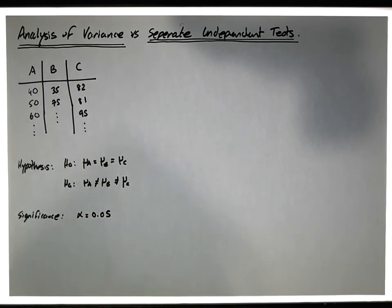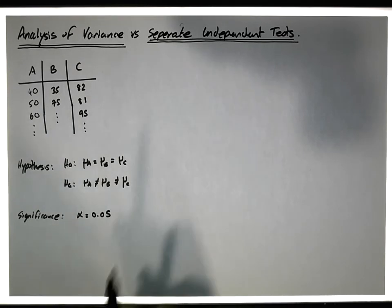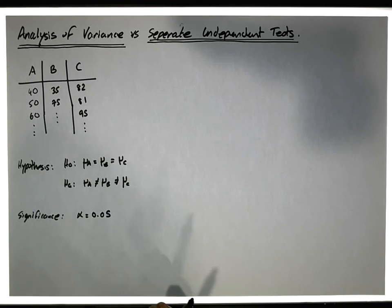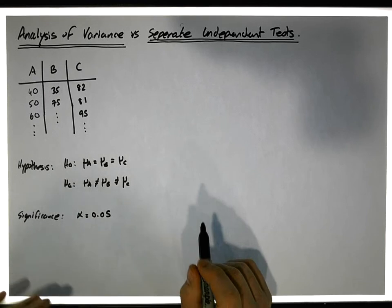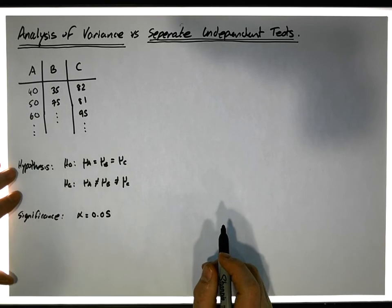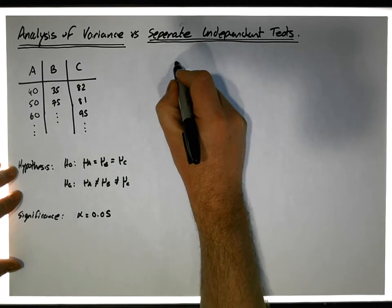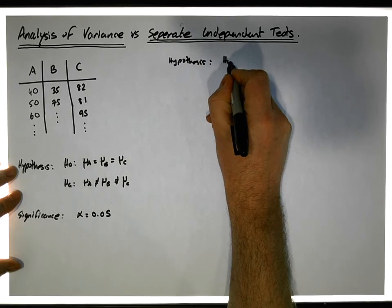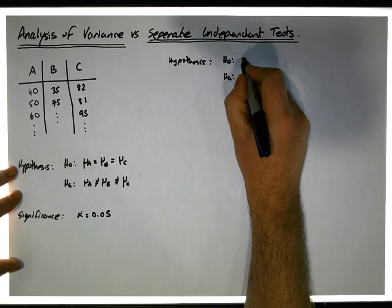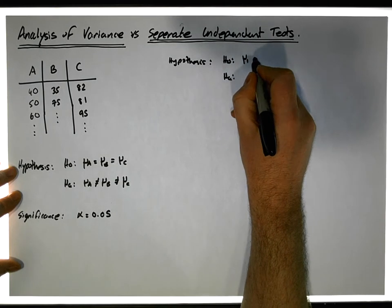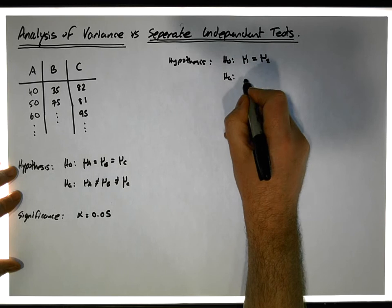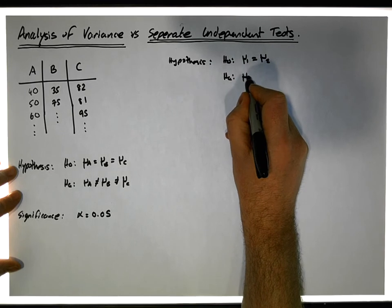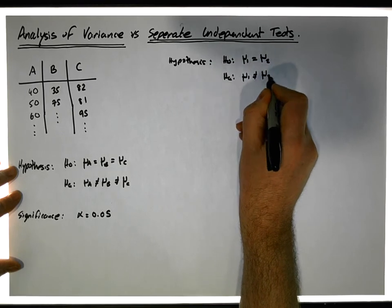You might ask yourself: why not undertake separate independent samples t-tests? An independent samples t-test checks whether two groups have been selected from populations with different population means. From an independent samples t-test perspective, the hypothesis has a null position H0 where the population mean for group one is the same as the population mean for group two.